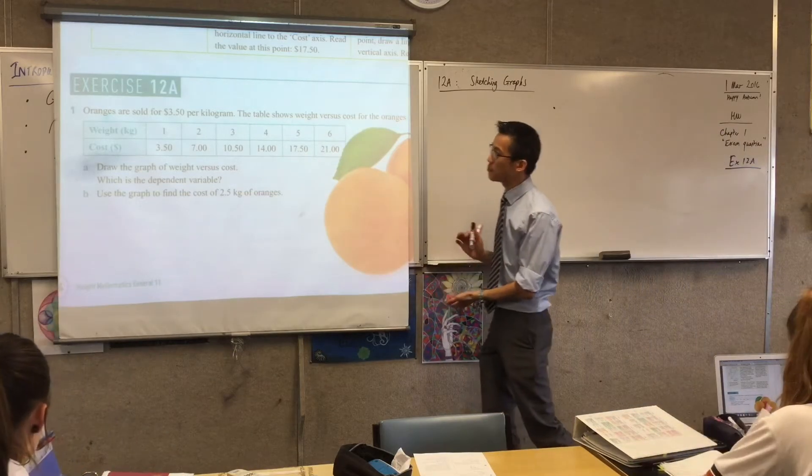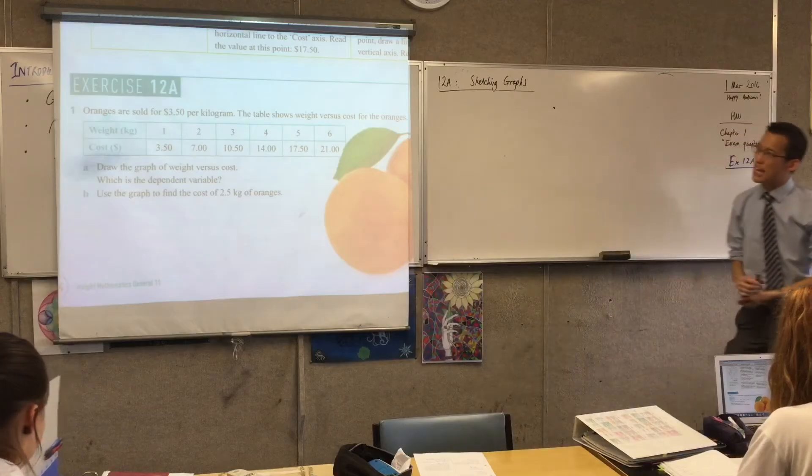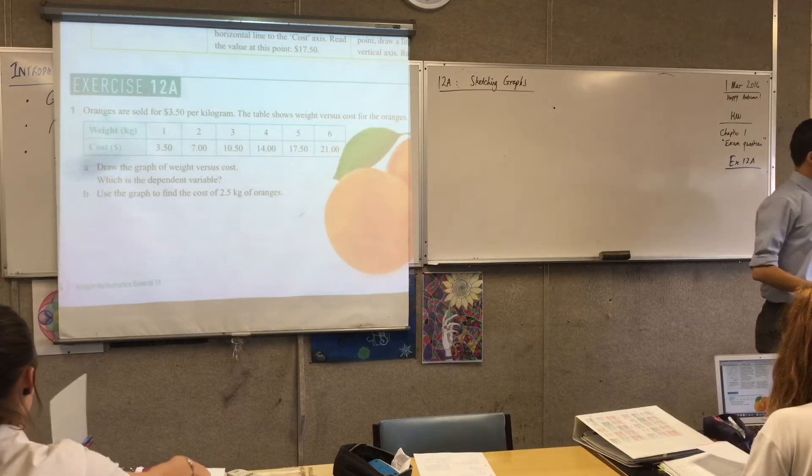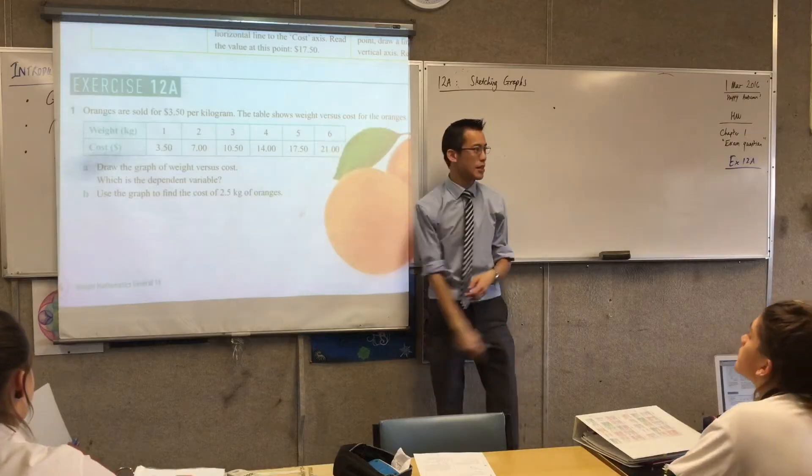Oranges are sold for $3.50 per kilogram. The table shows - now pause for a minute. In a second, we're going to read these two things.